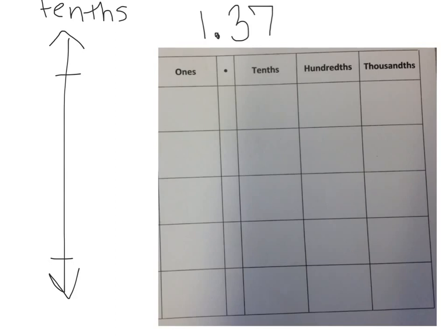So I have 1 and 37 hundredths, and I want to decompose that number as many ways as possible. So first I'll write it with 1, 3 tenths, and 7 hundredths.